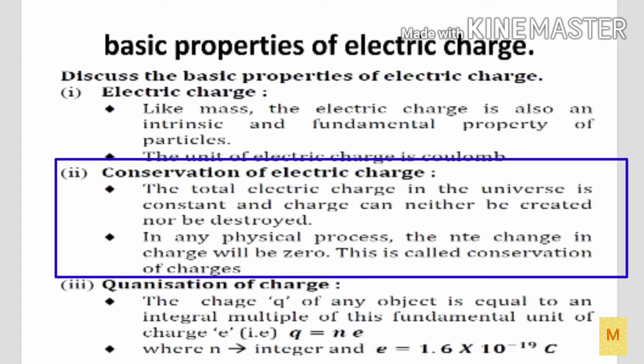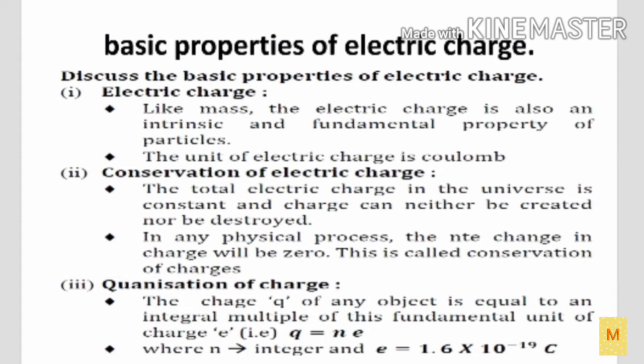Second one: conservation of electric charge. We are familiar with this word conservation, which means that the total electric charge in the universe is constant and the charge can neither be created nor be destroyed, but it can be transferred from one object to another object. In any physical process, the net change in charge will be zero. This is called conservation of charges.